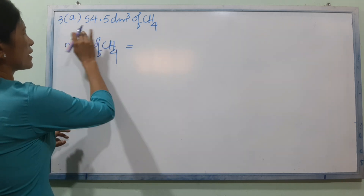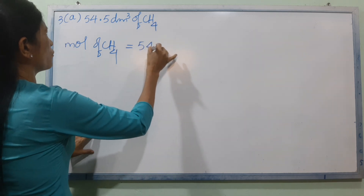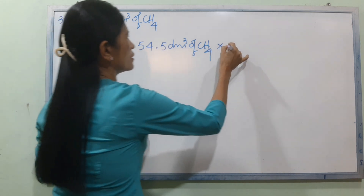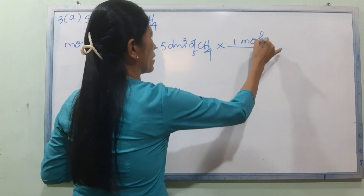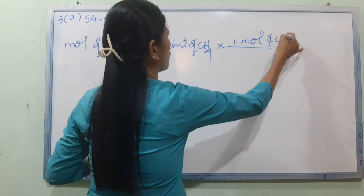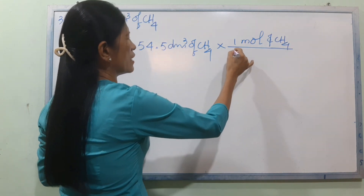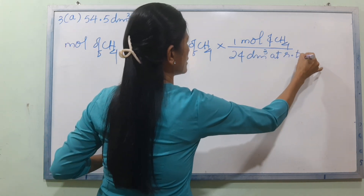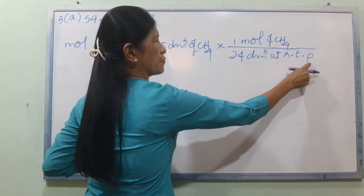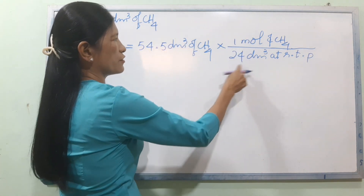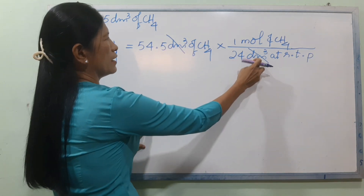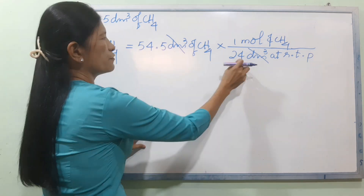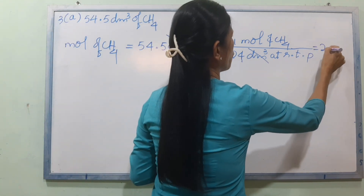For part A, we have 54.5 dm³. At RTP, one mole occupies 24 dm³. RTP is room temperature and pressure. One mole equals 24 dm³. So for 54.5 dm³ divided by 24 dm³ per mole, the answer is approximately 2.27 moles.